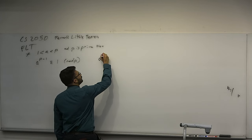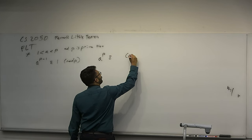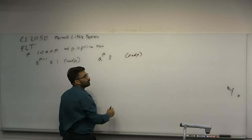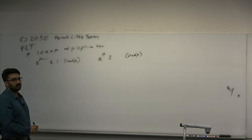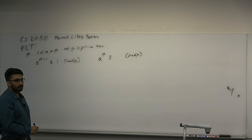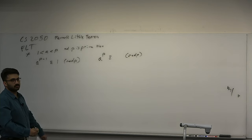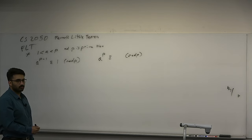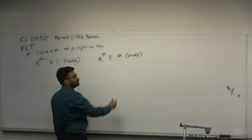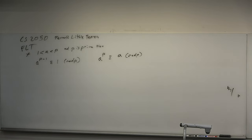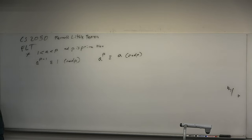Equivalently, this can be rewritten as: a to the p is congruent to what mod p? Not a rhetorical question — what's a to the p congruent to? A. So multiply by a on both sides. If a to the p minus 1 is congruent to 1, multiply by a on both sides, you get a to the p is congruent to a mod p.